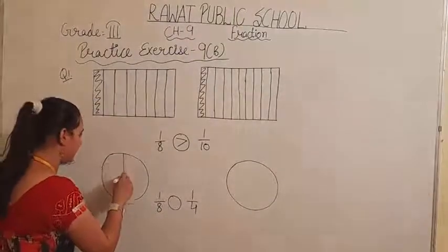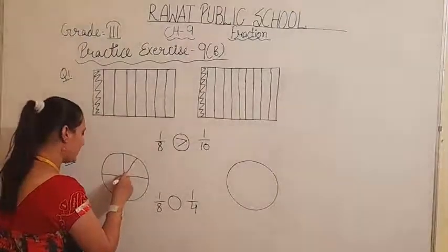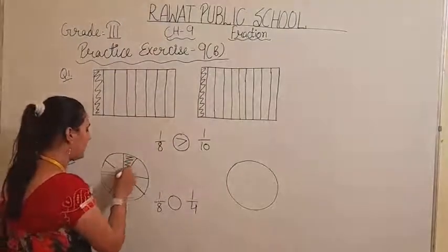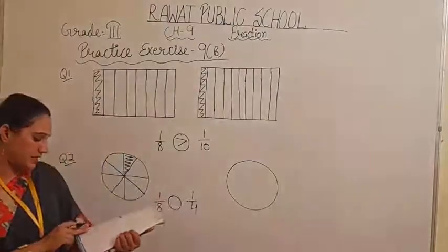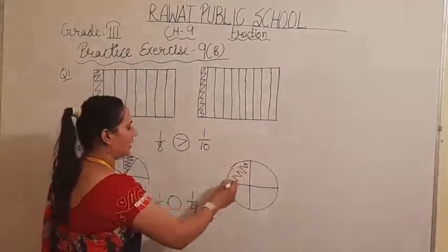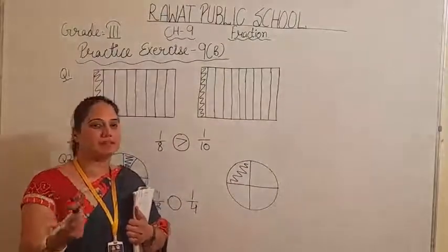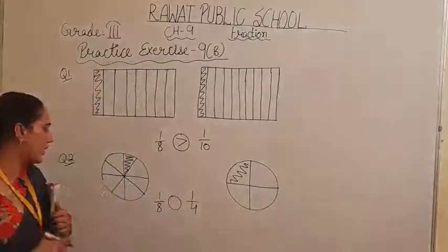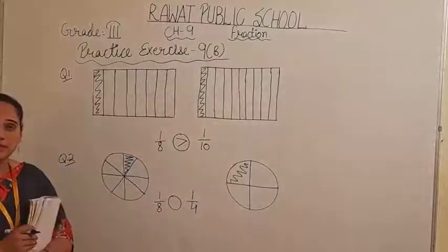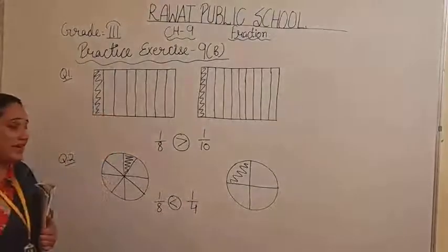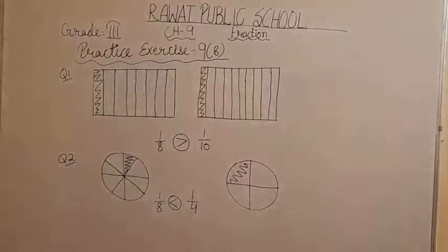Now for question 2, I have to shade 1 by 8 again — dividing into 8 parts and shading 1 part. On the other side, it says 1 by 4. So I divide into 4 parts: 1, 2, 3, and 4, with 1 part shaded. You can shade the images with color or pencil, but don't press too hard. Now, 1 by 8 and 1 by 4 — which one is bigger? 1 by 8 is smaller than 1 by 4. We have 2 more questions of the same type to solve.